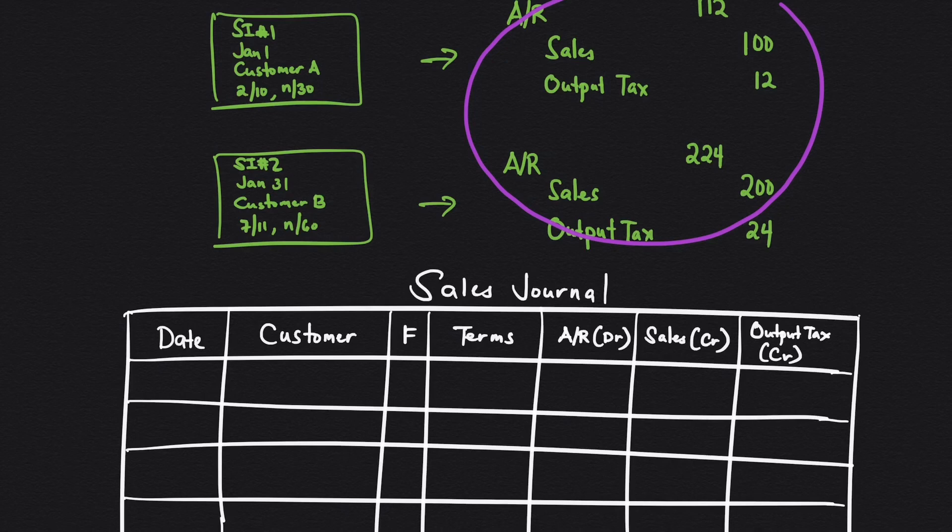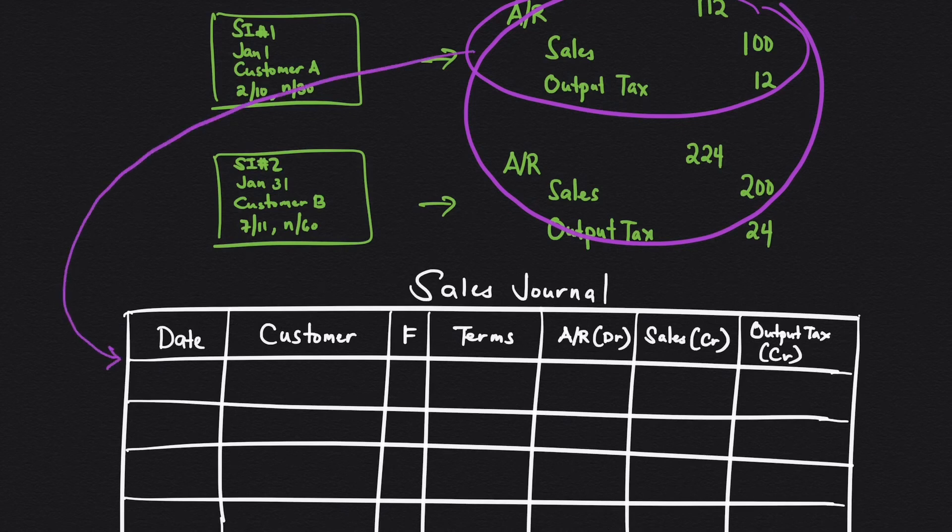Now, how can we convert these entries to the sales journal? Actually, the format of the sales journal is very straightforward. Let us try to record the first transaction. I will place this one here. For the customer, just write the customer name, customer A. And then we have the F.